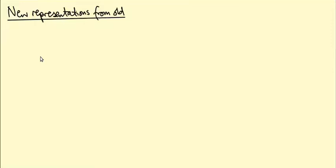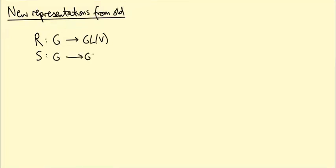We have now encountered four representations of the group SU(2): a 0, 1, 2, and a 3-dimensional representation. We've claimed that there are irreducible representations of every complex dimension, so we'd like a way of constructing new representations out of old ones. If we're given a representation r on a vector space V — a map r from G to GL(V) — and a representation s from the same group to GL(W), where V and W are two different vector spaces, how can we construct more representations starting from these?